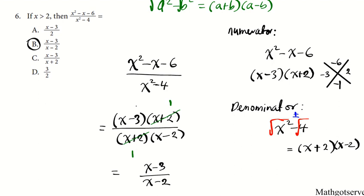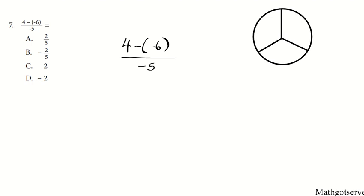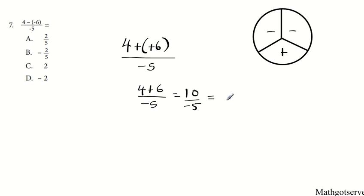Let's move on to question number 7. We're going to do 4 minus negative 6, over negative 5. What is negative times negative? Our peace sign tells us that anytime we have the same signs being multiplied together, we have a plus. So minus times minus is plus — you can slash and dash. This becomes 4 plus 6 over negative 5, which is 10 over negative 5, which equals negative 2. The answer for number 7 is D.